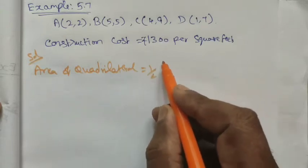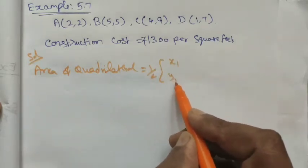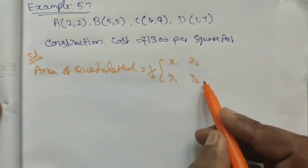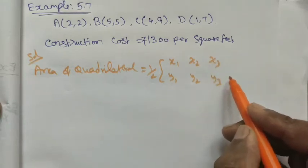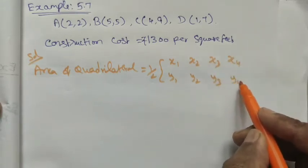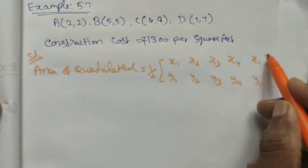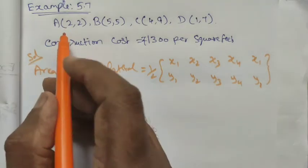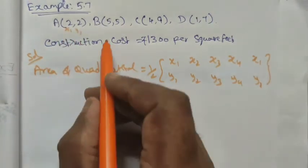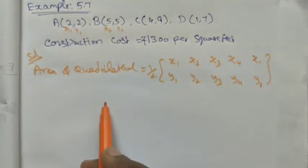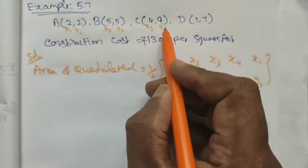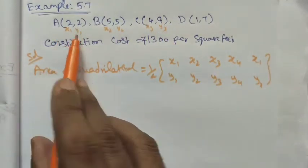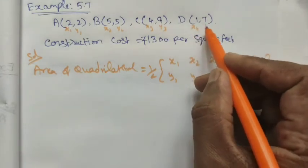For solution, area of quadrilateral is equal to half into the formula x1 y1, x2 y2, x3 y3, x4 y4, again x1 y1, because we have four points. Quadrilateral means four points, four vertices. Let me take this A point as x1 y1, B point as x2 y2, C point as x3 y3, and then x4 y4.